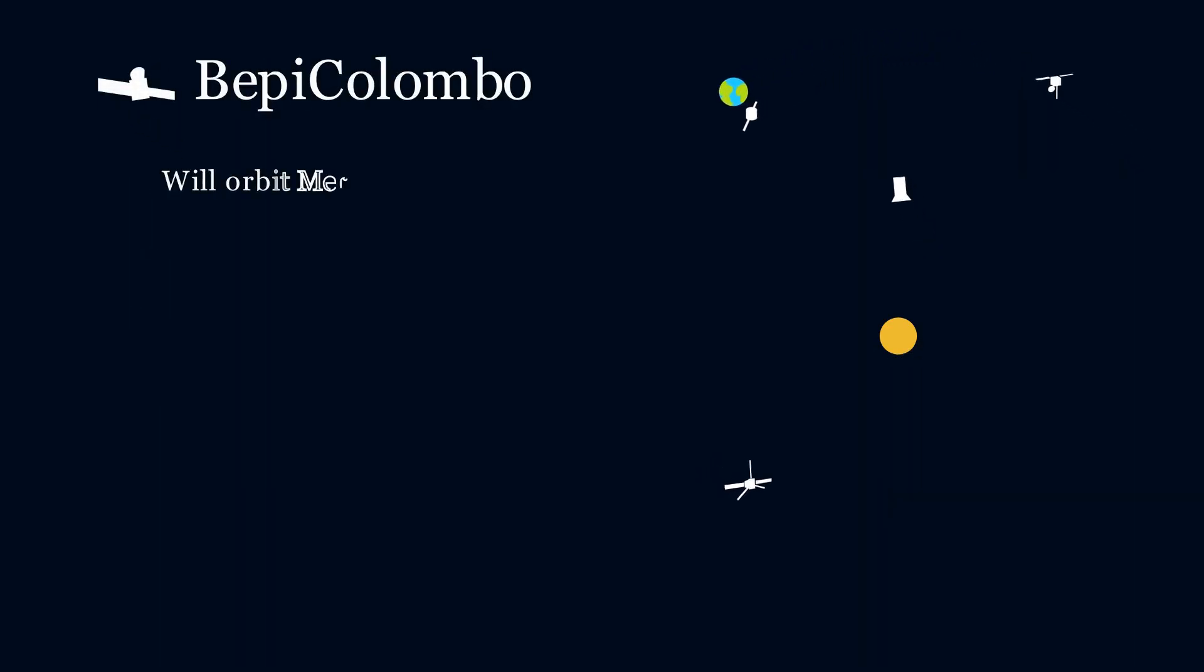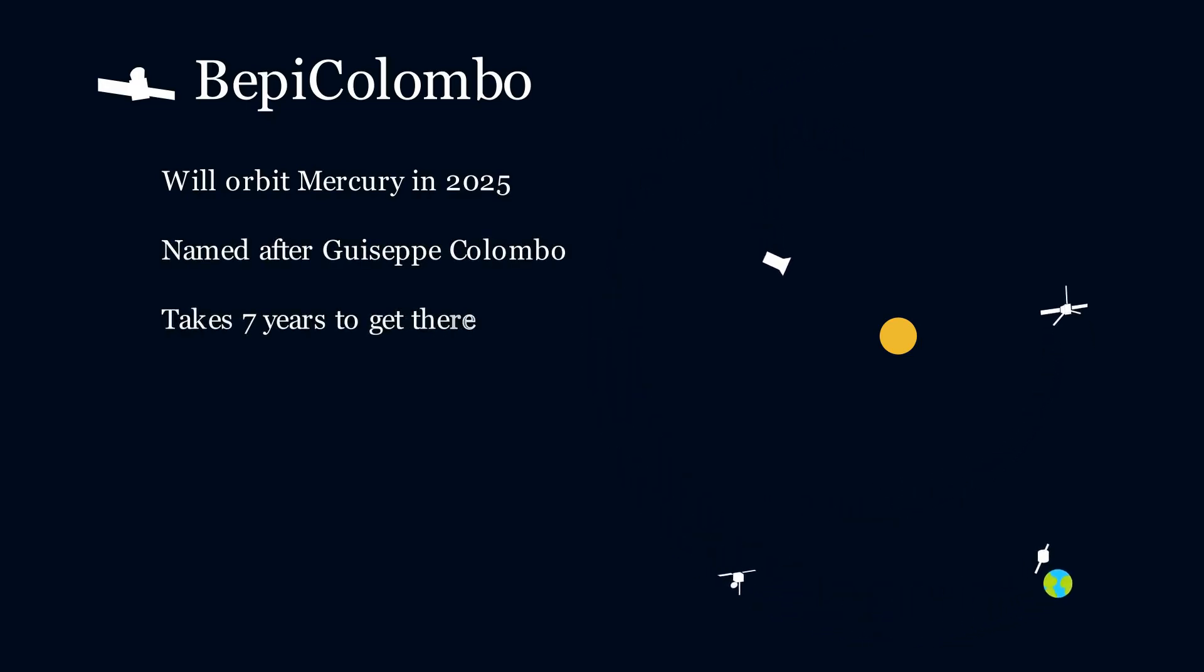Finally, there is Bepi Colombo, whose true love is Mercury, which will orbit in 2025. But to pass the time on its seven-year journey, they figured it might as well measure the solar wind.